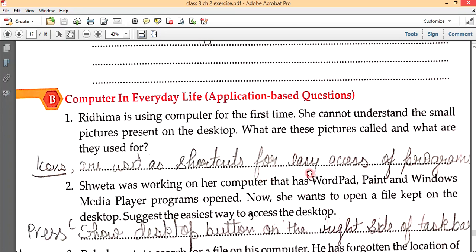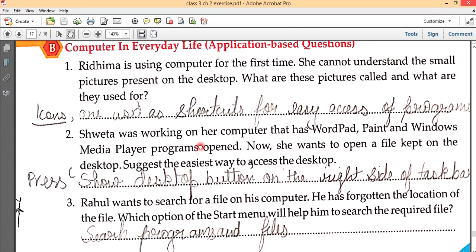Sweta was working on her computer that has WordPad, Paint and Windows Media Player programs open. Now she wants to open a file kept on the desktop. Suggest the easiest way to access the desktop. Press the show desktop button on the right side of the taskbar and it will be displayed.